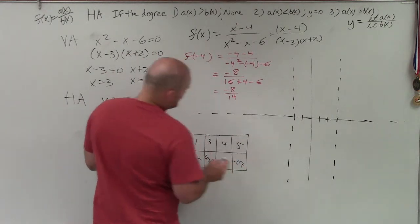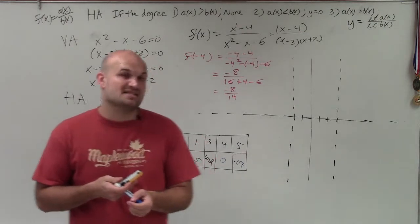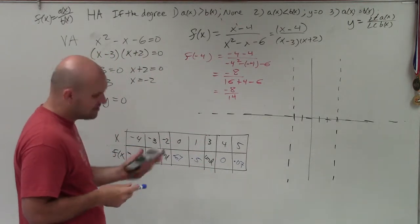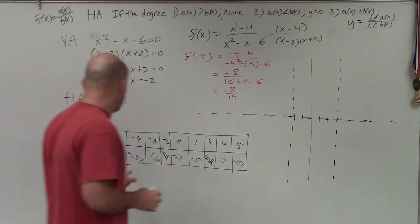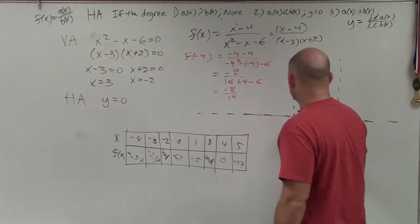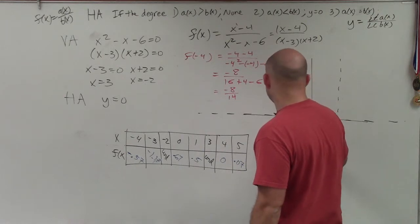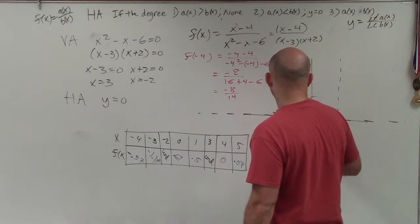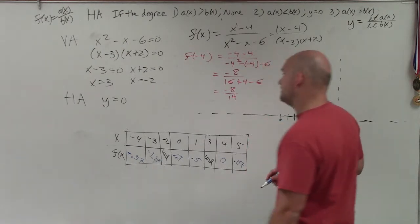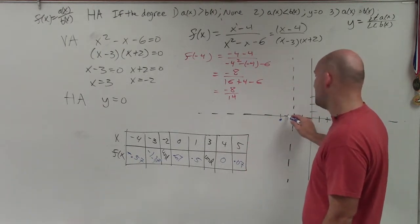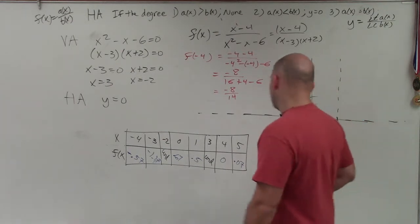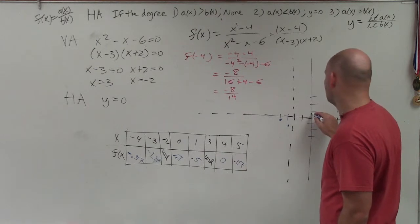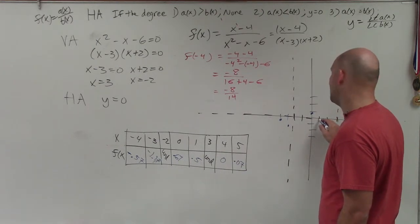Now, this is interesting, because we always talk about vertical asymptotes of them not crossing. But in this case, you can see that it does cross at 0, which is interesting. So let's go ahead and plot what we have here. So at negative 1, 2, 3, 4. At negative 4, I'm at negative 0.57, which is 1, 2, 3, 1, 2, 3. And then at negative 3, I'm at negative 1.17. At negative 2 is undefined. 0 is at 0.67. And 1 is at 0.5.